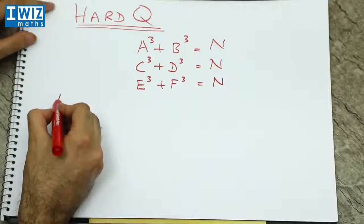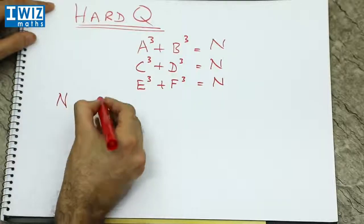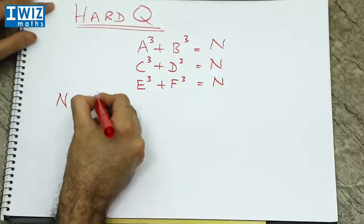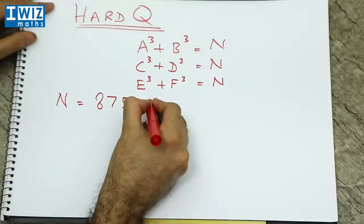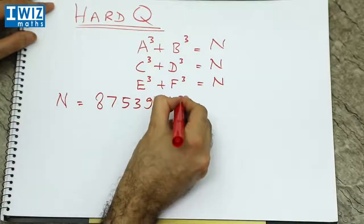The number n is a rather large number. It is 87539319.